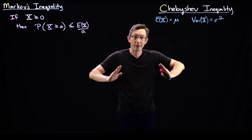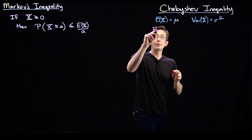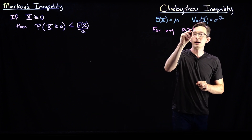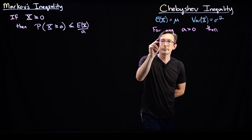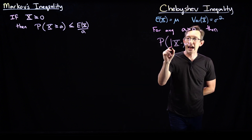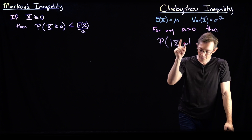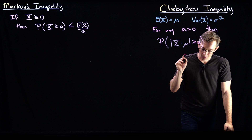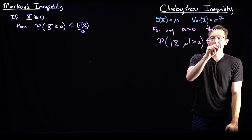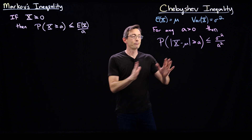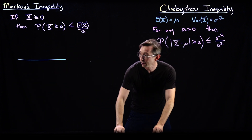Chebyshev's inequality is going to give you a result about how much the variance tightens or spreads the distribution. For any positive number a, the probability of |x − μ| — the absolute value of the deviation of x from its mean — being greater than or equal to a, is less than or equal to the variance σ² divided by a². I'm going to draw a distribution here because I like having a picture in mind of what I'm talking about.